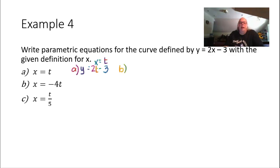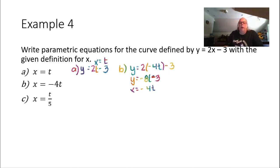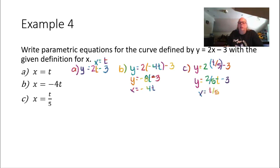For part B, x equals negative 4t, so y equals 2 times negative 4t minus 3, which gives y equals negative 8t minus 3. The parametric equations are x equals negative 4t and y equals negative 8t minus 3. For part C, x equals t divided by 5, so y equals 2 times t over 5 minus 3, which gives y equals 2 fifths t minus 3. The parametric equations are x equals t over 5 and y equals 2 fifths t minus 3.